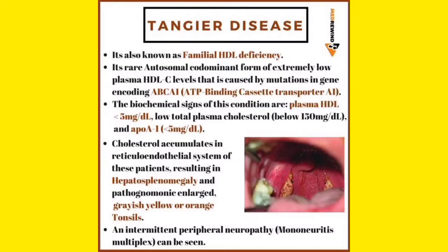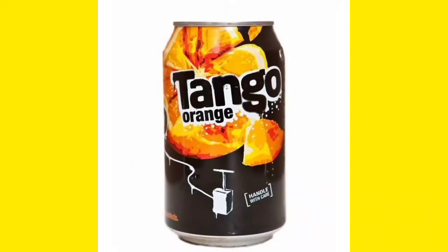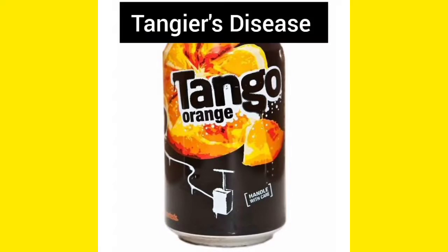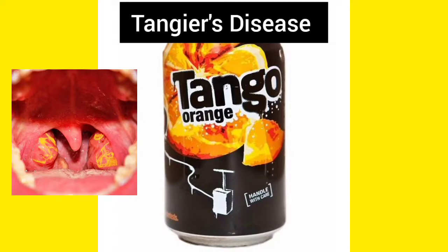Here is a trick to remember this: think of Tango, which is orange in color. From this you can remember Tangier's disease — Tango is orange, so Tangier's disease gives you orange-colored tonsils. They may give you an image-based question showing orange-colored tonsils; always remember that is Tangier's disease.